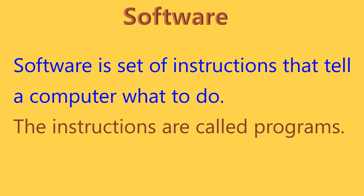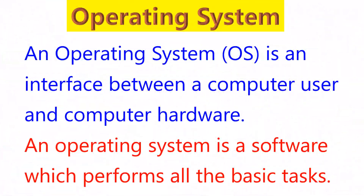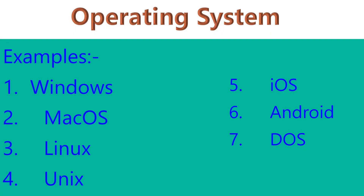Software is a set of instructions to the computer. These instructions are called programs. An operating system is software that performs all basic tasks. The short form of operating system is OS. Examples of operating systems are Windows, Mac OS, Linux, Unix, iOS, and Android.